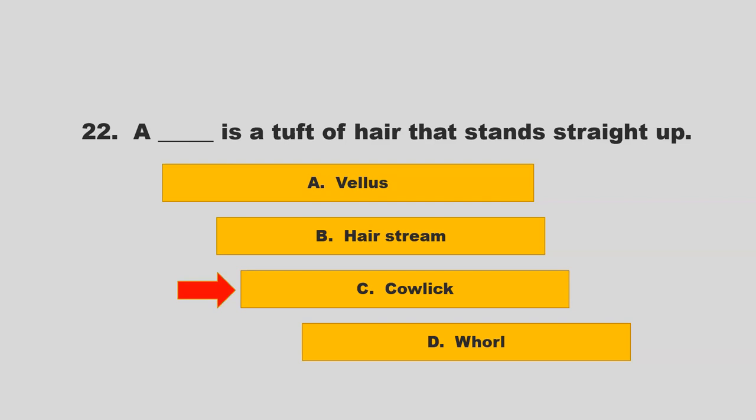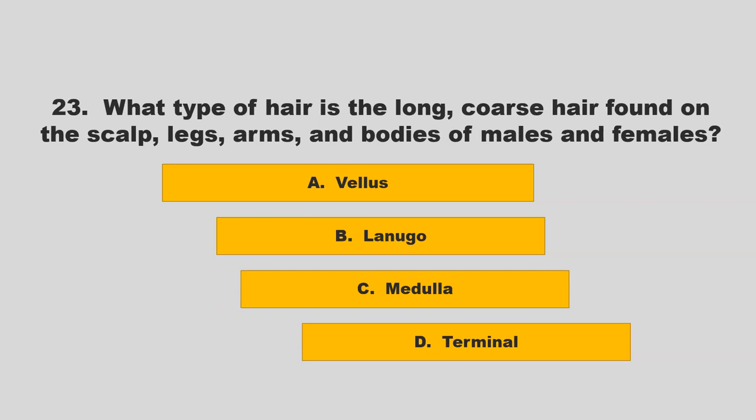What type of hair is the long, coarse hair found on the scalp, legs, arms, and bodies of males and females? Is it vellus, lanugo, medulla, or terminal? If you chose D, terminal, you are correct.